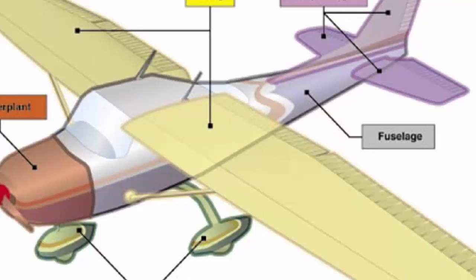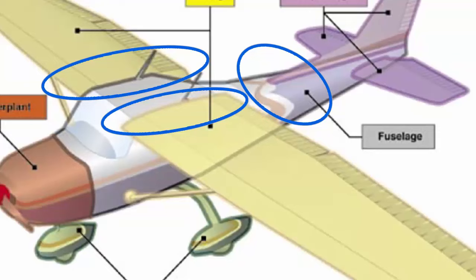The fuselage is the central body of an airplane and is designed to accommodate the crew, passengers, and cargo. It also provides the structural connection for the wings and tail assembly.